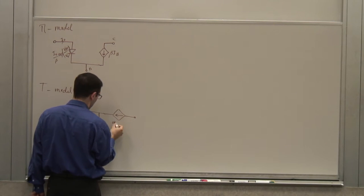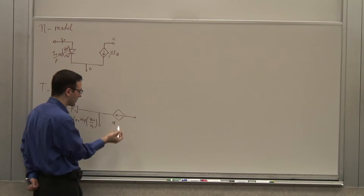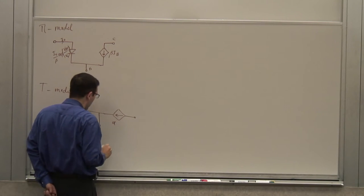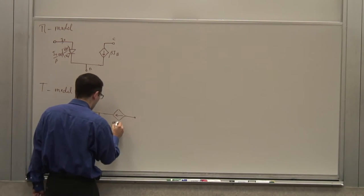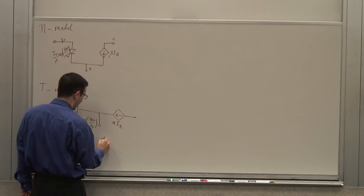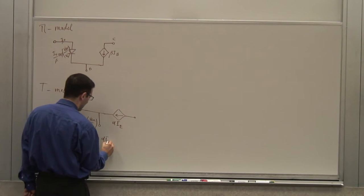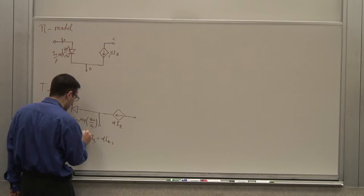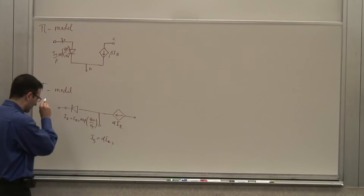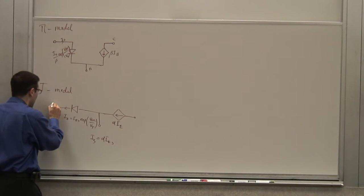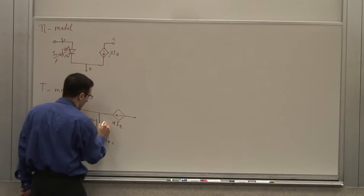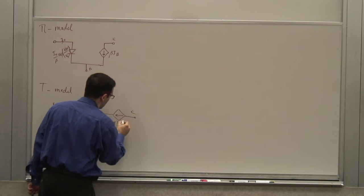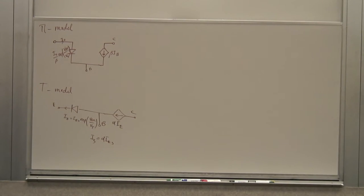When you don't specify a subscript for alpha, you mean alpha_forward. IE is related such that alpha_F times IES = IS. This was the emitter, base, and collector for NPN.